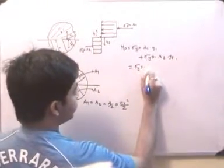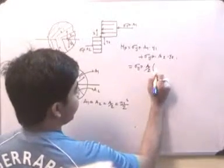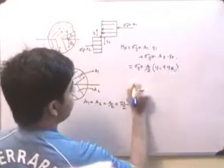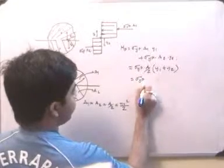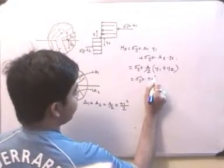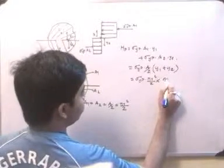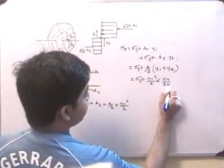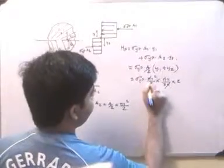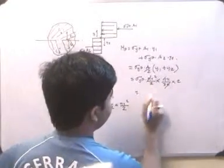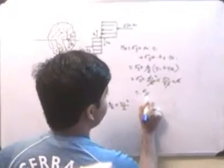If we take it common, it will be equal to y1 plus y2. Now σyp into a is πr² by 2, y1 plus y2 is equal to nothing but 4r by 3π into 2. So π, π gets cancelled, and essentially 2, 2 gets cancelled.